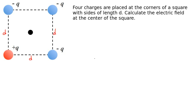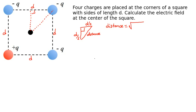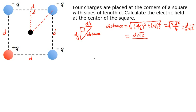We mark the sides d and calculate the distance to the center. Each half-side is d over two. Using the Pythagorean theorem, the distance equals the square root of (d/2)² + (d/2)², which gives the square root of 2d²/4, or d/2 times the square root of two. We can also write this as d times square root of two over two, which simplifies to d over the square root of two.